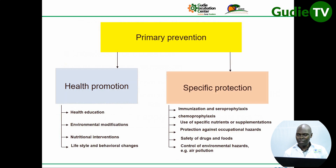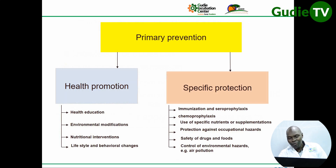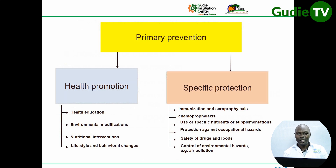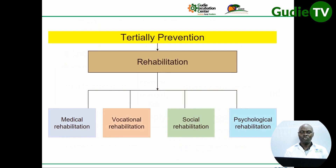Primary prevention refers to the pre-disease stage and covers two major aspects: health promotion and specific protection. Under specific protection, we have immunization, chemo-prevention or prophylaxis, use of specific nutrients or supplementation, safety of drugs and foods, and control of environmental hazards. Under health promotion, we have health education, environmental adjustments, nutritional interventions, and lifestyle and behavioral changes — for example, stopping smoking, stopping alcohol, or changing sexual behavior.